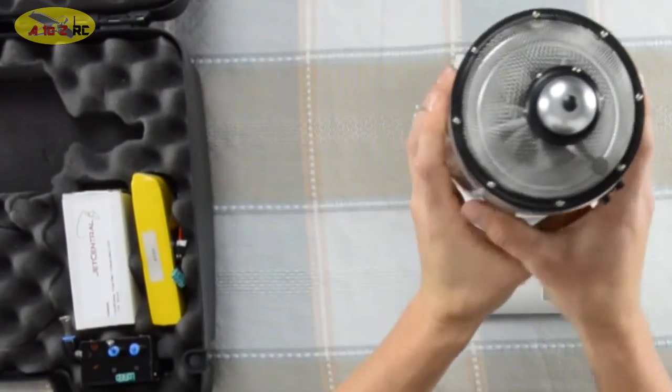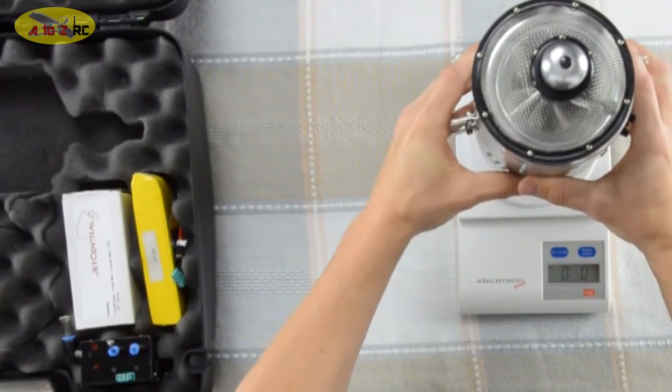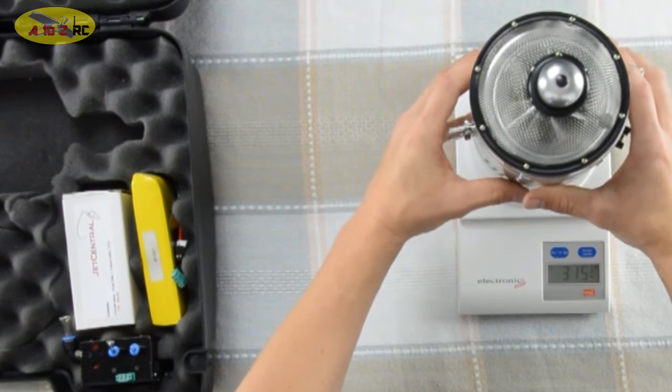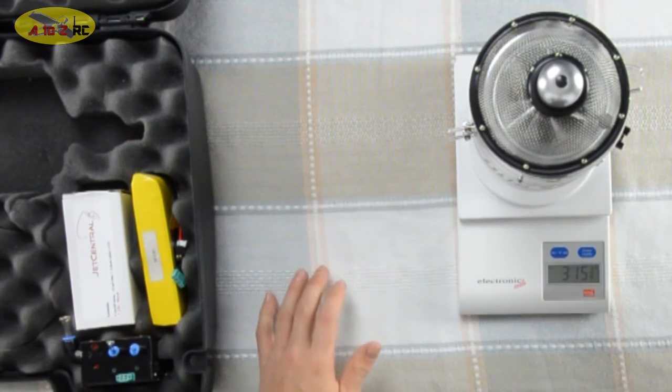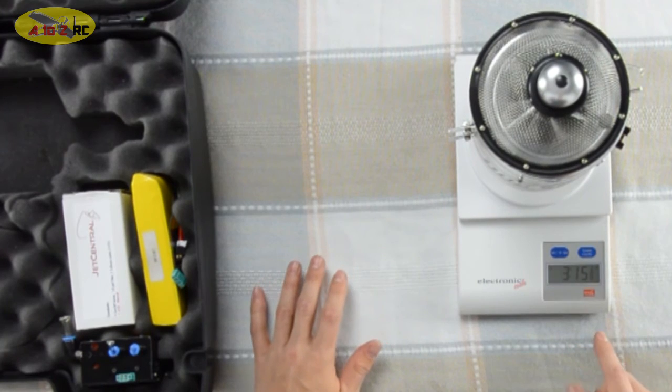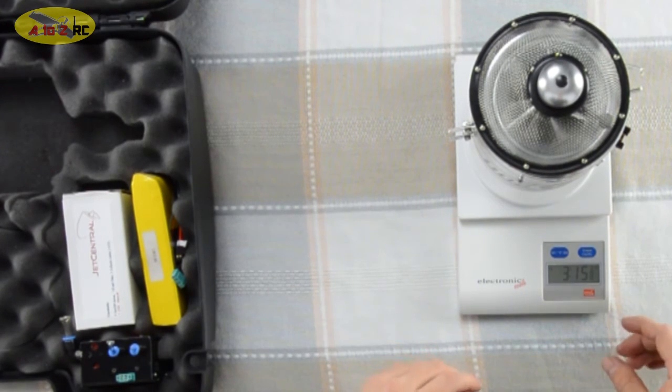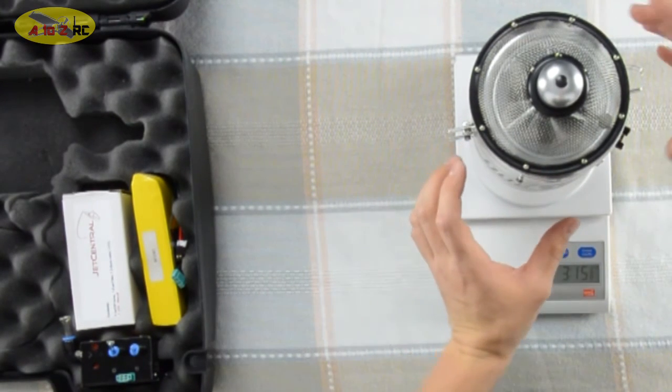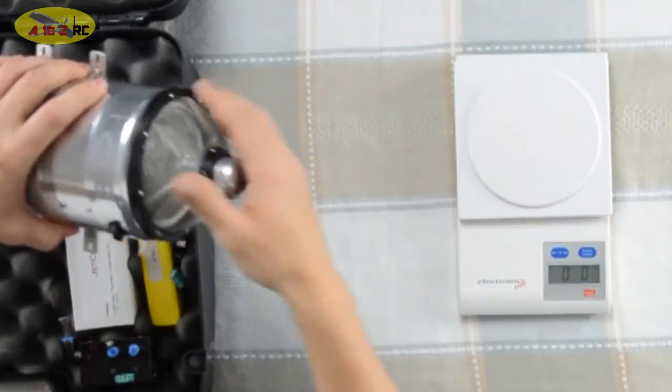Let's go ahead and grab the turbine. Again, we are in pounds and ounces. Set the turbine right on. It looks like we are right at three pounds, fifteen and three-eighths ounces. And that's with the FOD screen. Put that back.